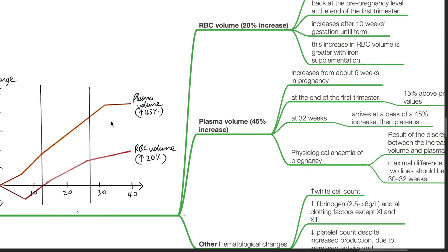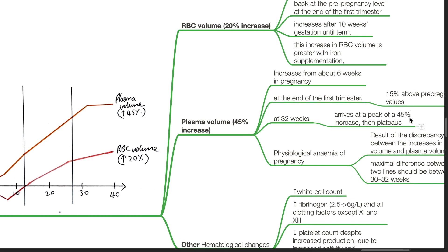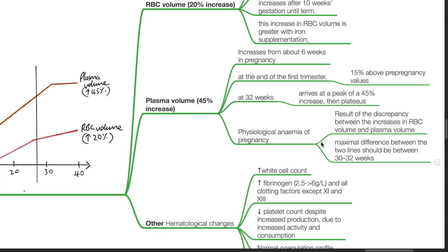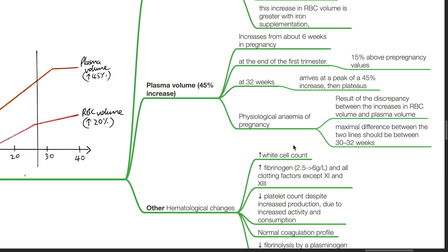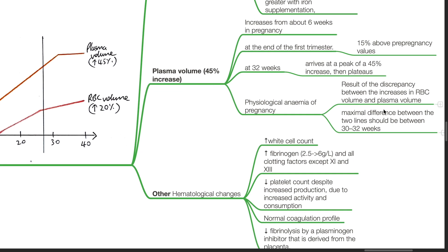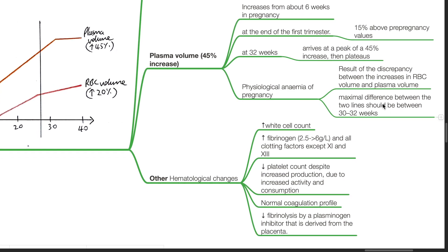At 32 weeks, it arrives at a peak of 45% increase and then plateaus. Physiological anemia of pregnancy is a result of the discrepancy between the increases in RBC volume and plasma volume. The maximal difference between the two lines should be between 30 to 32 weeks.